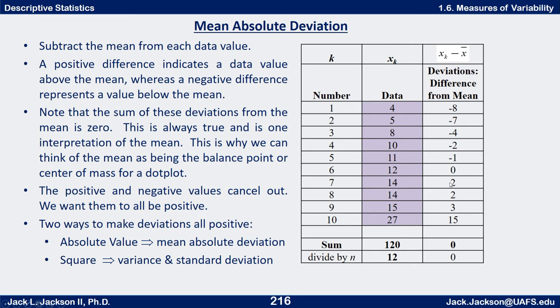There are two ways to make these deviations all positive. One way is to take the absolute value of everything. Another way is to square all these values. Taking the absolute value leads us to the mean absolute deviation. Squaring leads to the more commonly used measures of variance and standard deviation we'll look at in our next video.